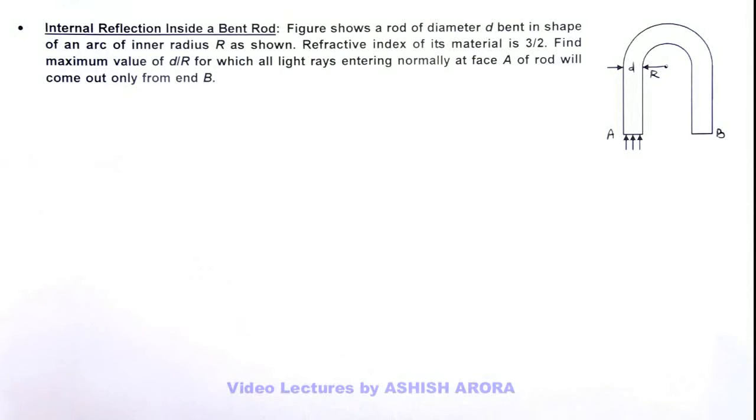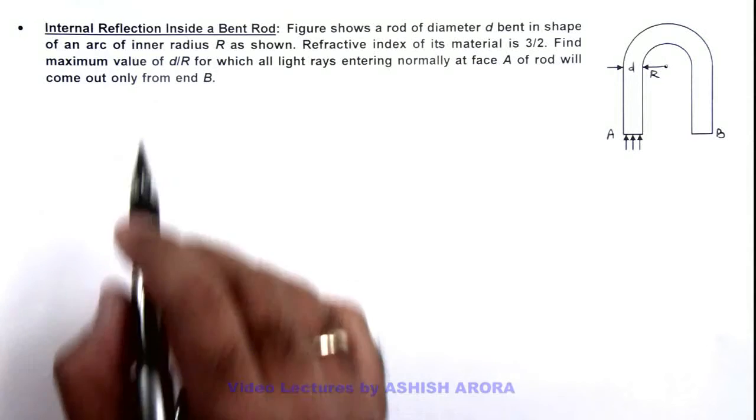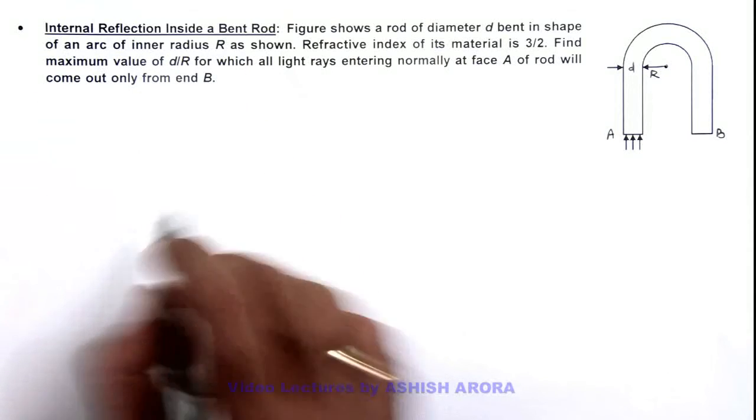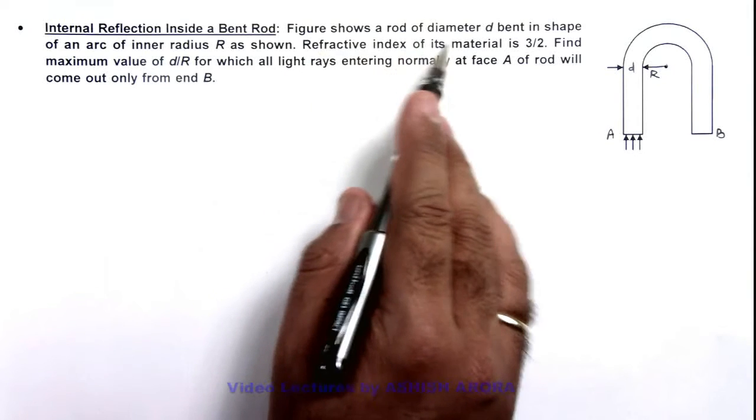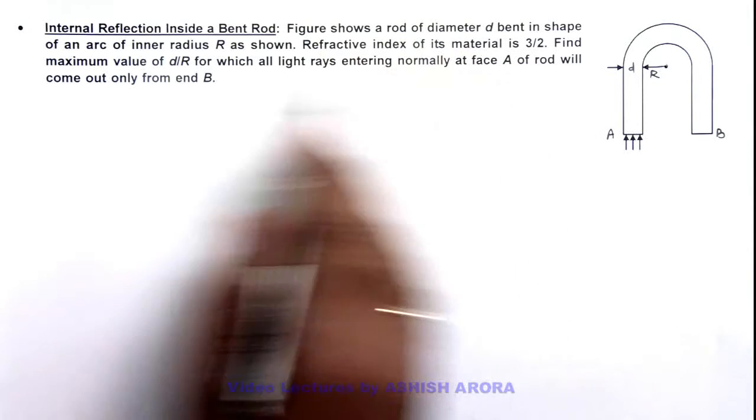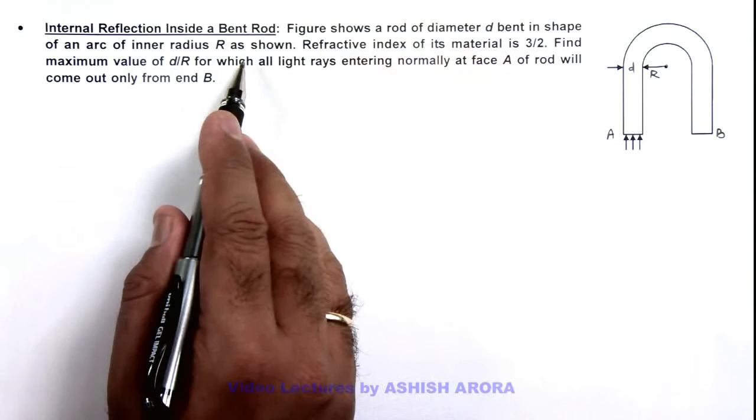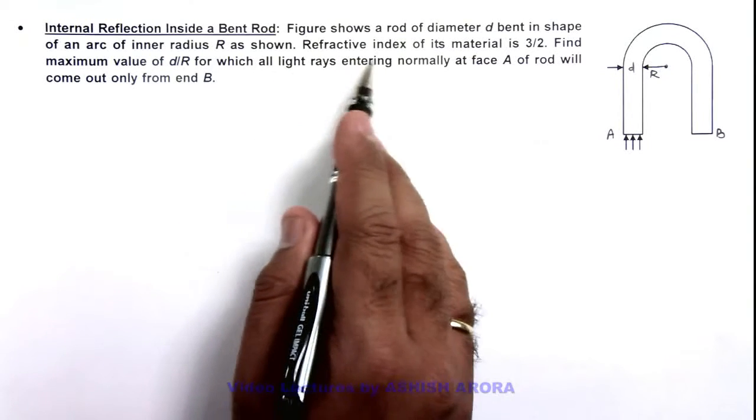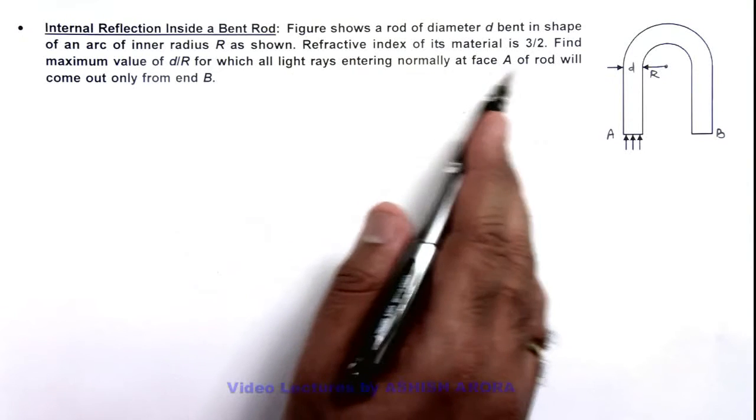In this illustration, we'll analyze a situation when internal reflection takes place inside a bent rod. Here the figure shows a rod of diameter d which is bent in the shape of an arc of inner radius r, as we can see here. The refractive index of its material is 3 by 2.